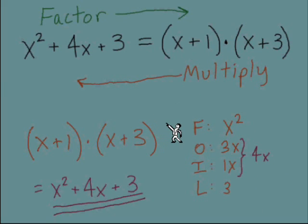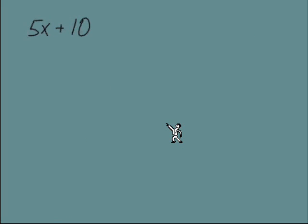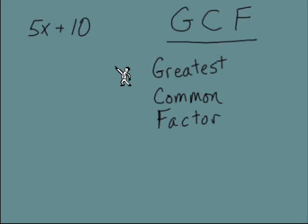But what's sometimes difficult about factoring polynomials is that different polynomials have different ways of factoring them. So we're going to just start with the GCF, the greatest common factor. And when we are talking about the greatest common factor, we're looking at all the terms we have.